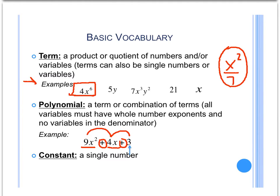Now a constant is just a single number. In this last example, the constant is 3.